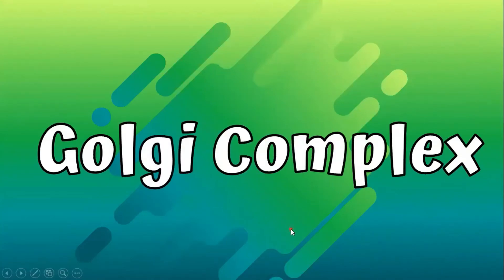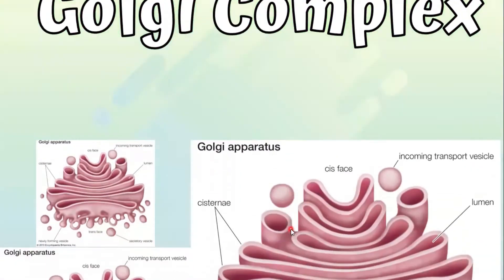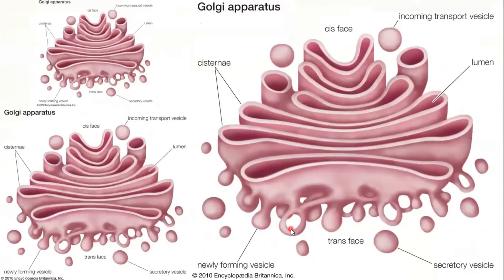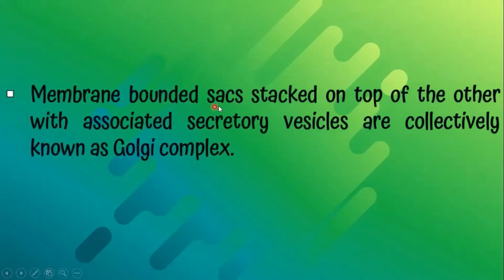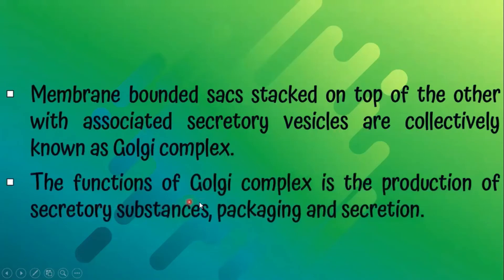Golgi complex. Membrane-bounded sacs stacked on top of one another with associated secretory vesicles are collectively known as the Golgi complex. The function of the Golgi complex is the production of secreted substances, packing them, and secretion.